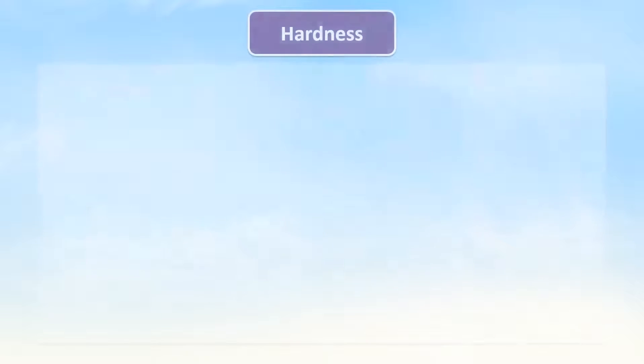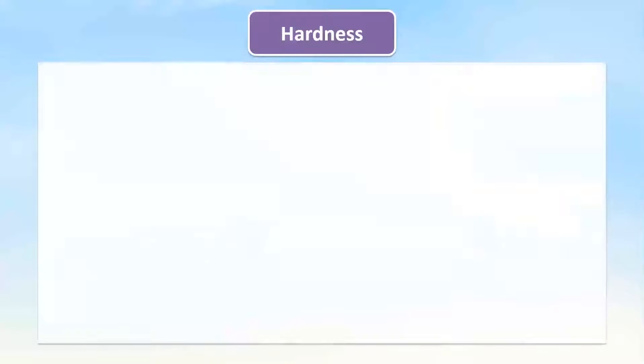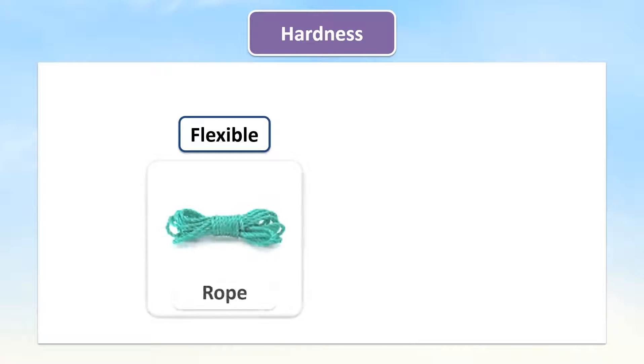Plastics differ from each other based on their hardness. Some plastics are flexible, like ropes, and some are hard, like buckets.